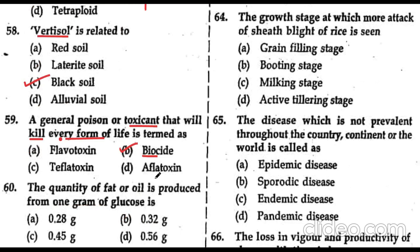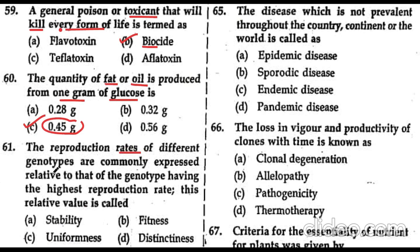Question 60: the quantity of fat or oil produced from one gram of glucose is 0.5 grams. Question 61: the reproduction rates of different genotypes are commonly expressed relative to that of the genotype having the highest reproduction rate. This relative value is called fitness.